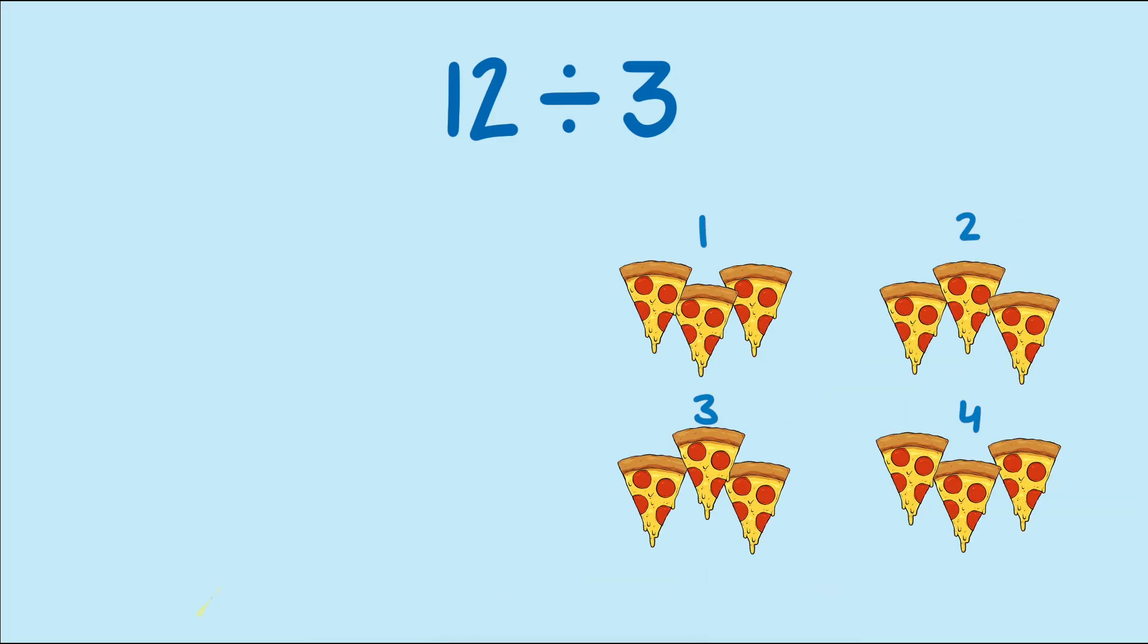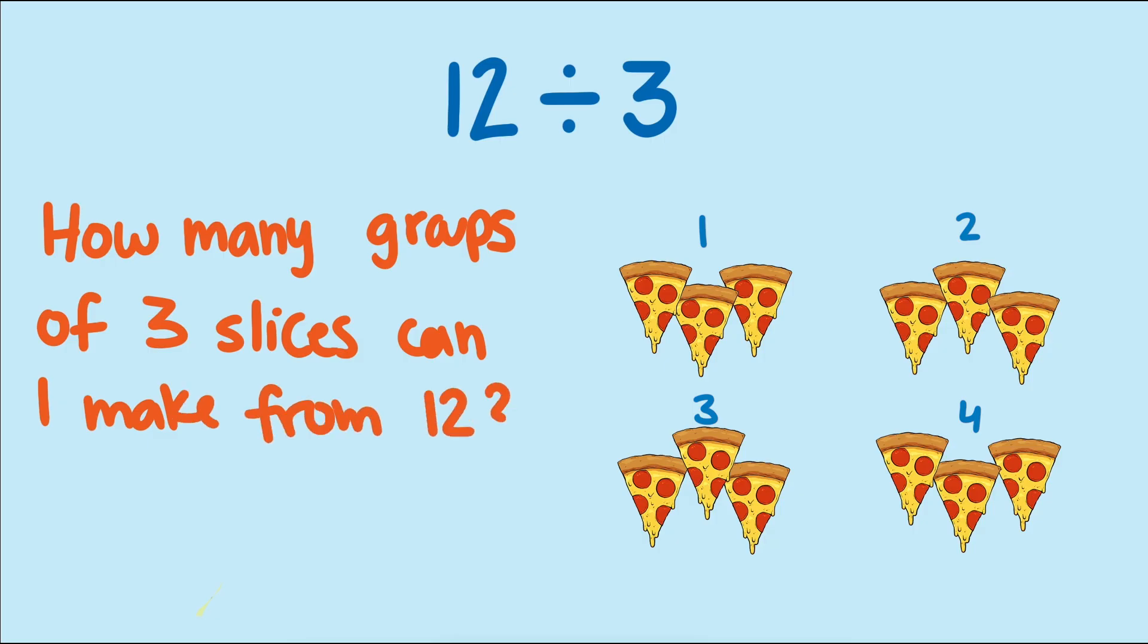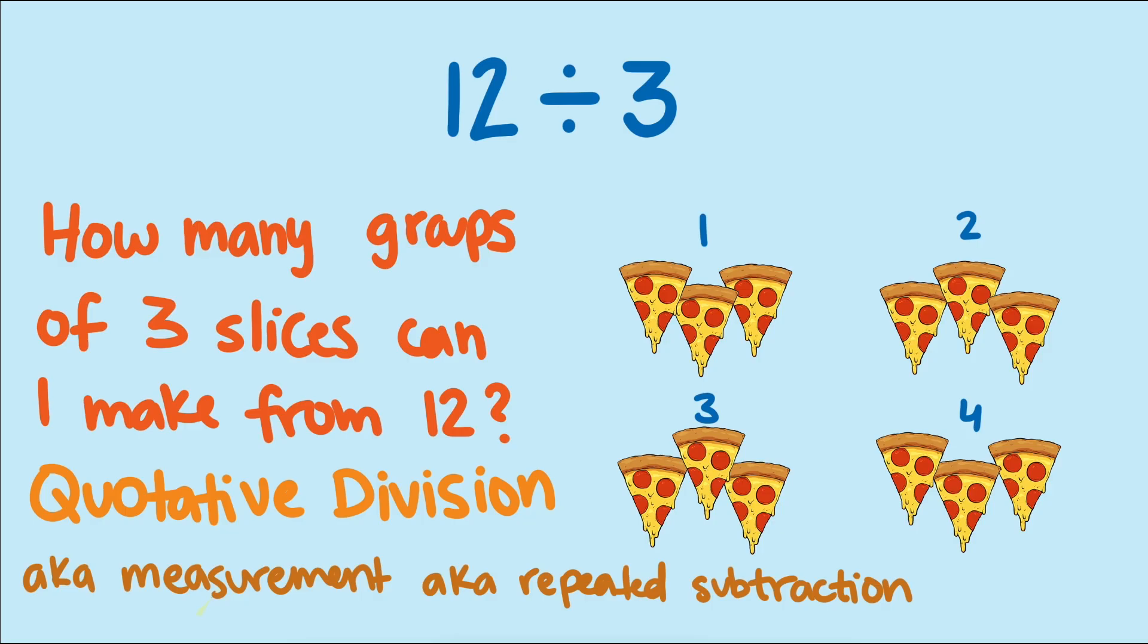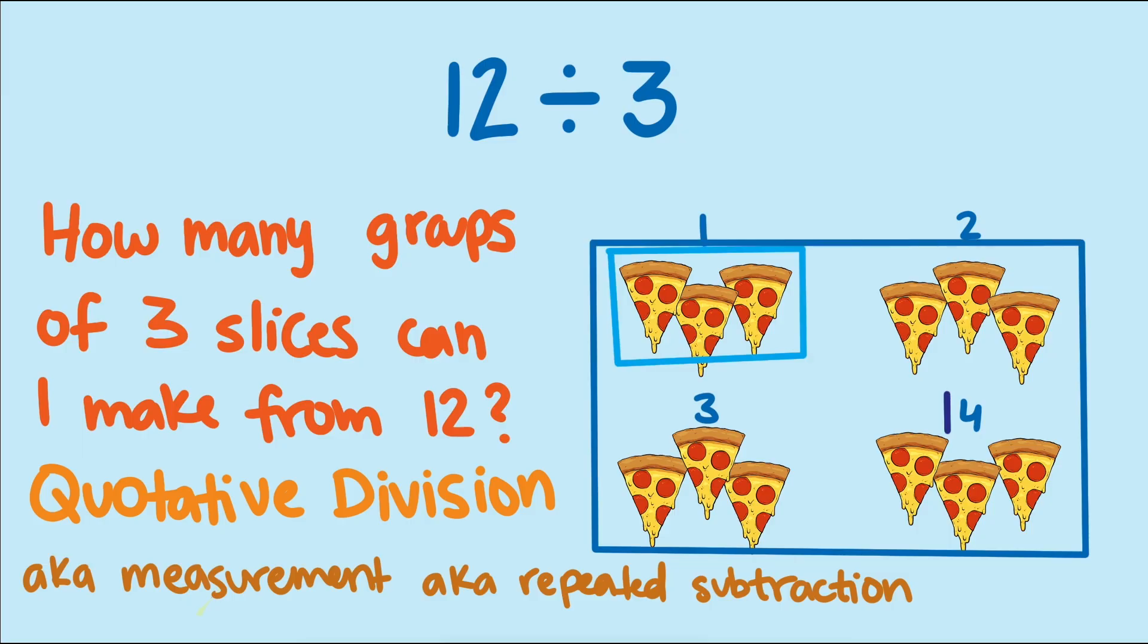But if you solved the pizza problem the second way, you're likely thinking, how many groups of three pizzas can I form from twelve? We call this quotative division, or sometimes measurement division, or repeated subtraction, because you're repeatedly subtracting off the divisor, three, from the dividend, twelve, to find the quotient, four.